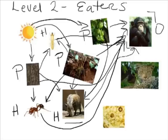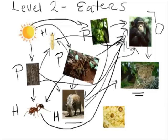Now, our chimpanzee is not going to be eating our leopard, because our leopard actually feeds upon chimps. So we're going to draw an arrow to that. Our leopard is also going to feed upon the bush pig as well. And our leopard, as you know many cats are, is a carnivore. So I'm going to label it with a C.